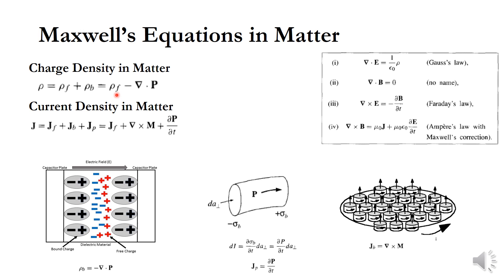The current density is also a real source. Current density has two components: one is the free current density, represented by J_F — the free electron current density.